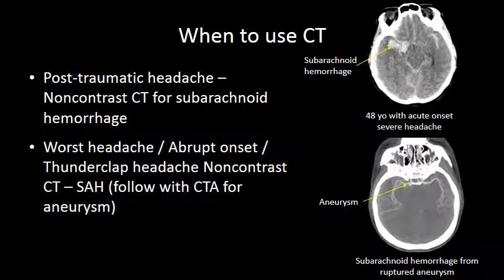We also commonly use CT when someone presents with the worst headache of their life, an abrupt onset headache — a thunderclap headache — the classic scenario in which you are concerned the patient has subarachnoid hemorrhage due to a ruptured aneurysm. You often start with a non-contrast head CT and then move on to a CTA of the head and neck, sometimes ordered concomitantly. These extremely severe abrupt onset headaches warrant at least a non-contrast head CT to rule out subarachnoid hemorrhage.